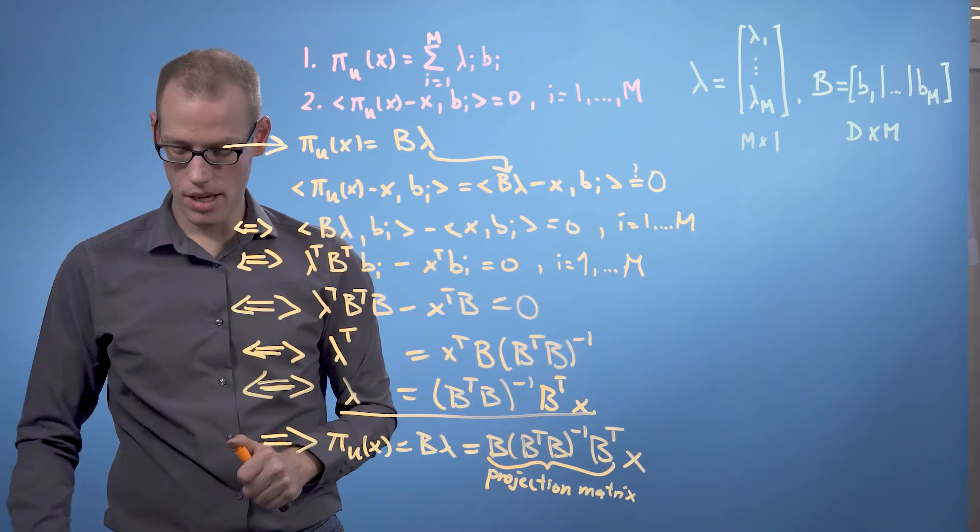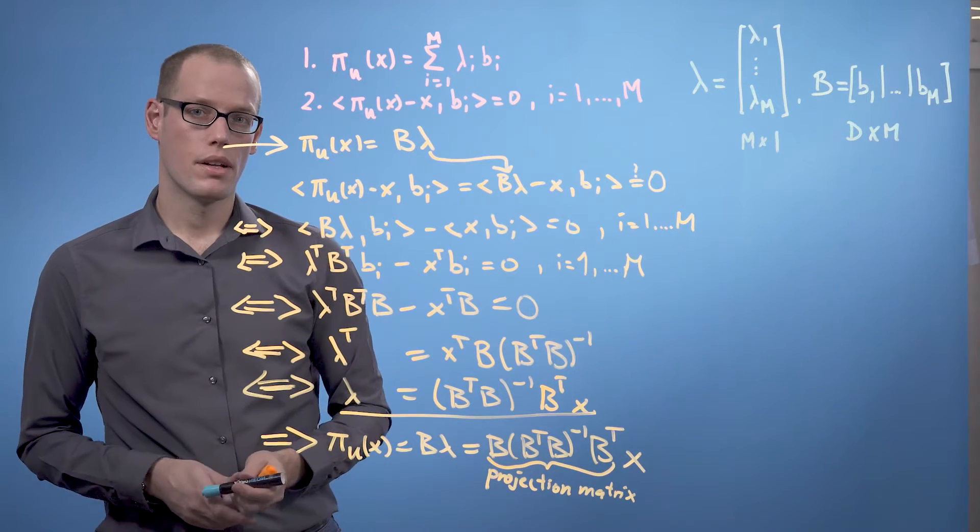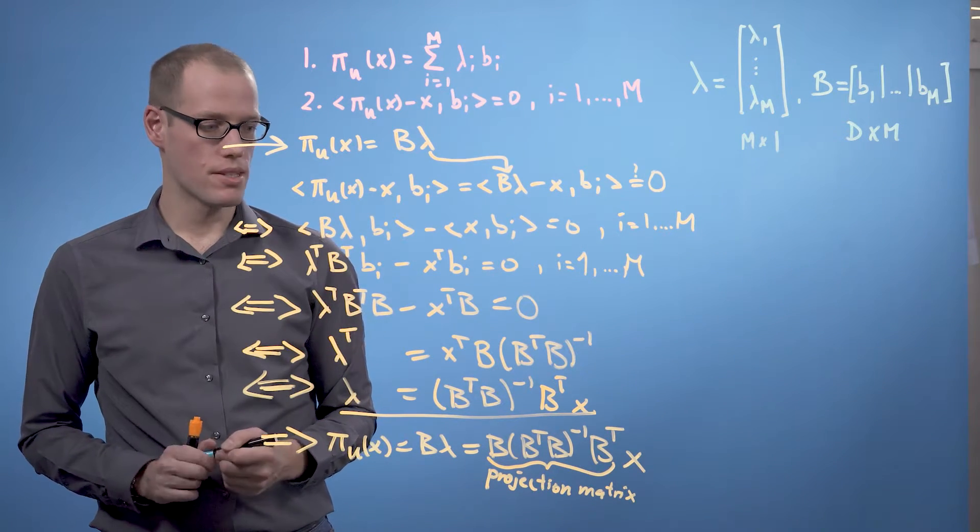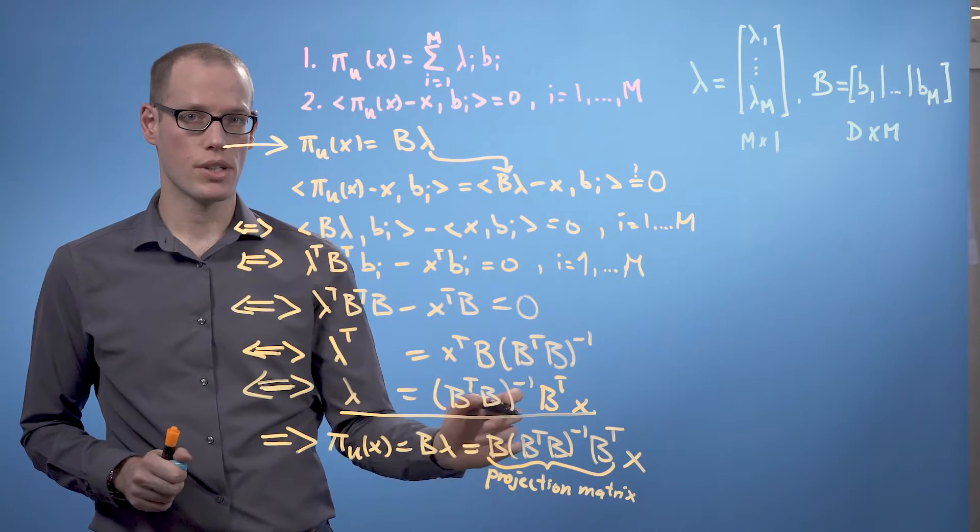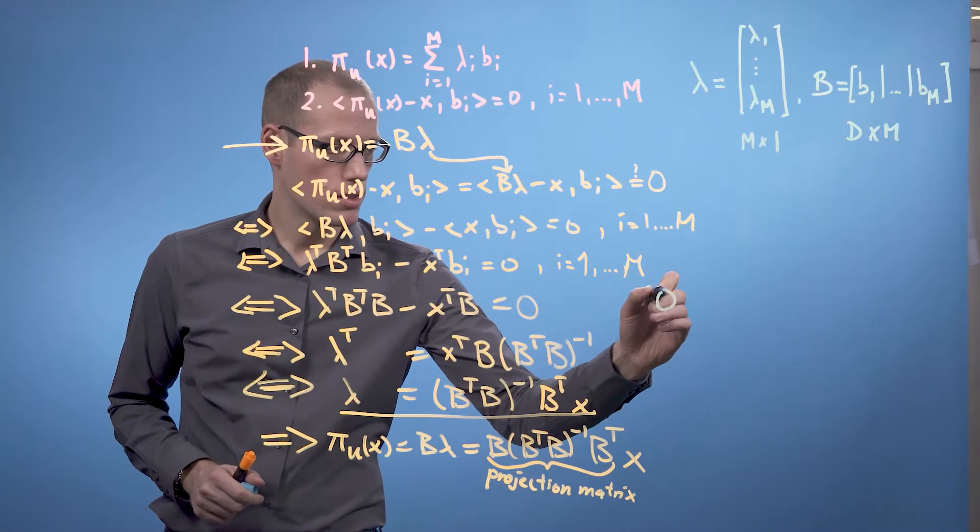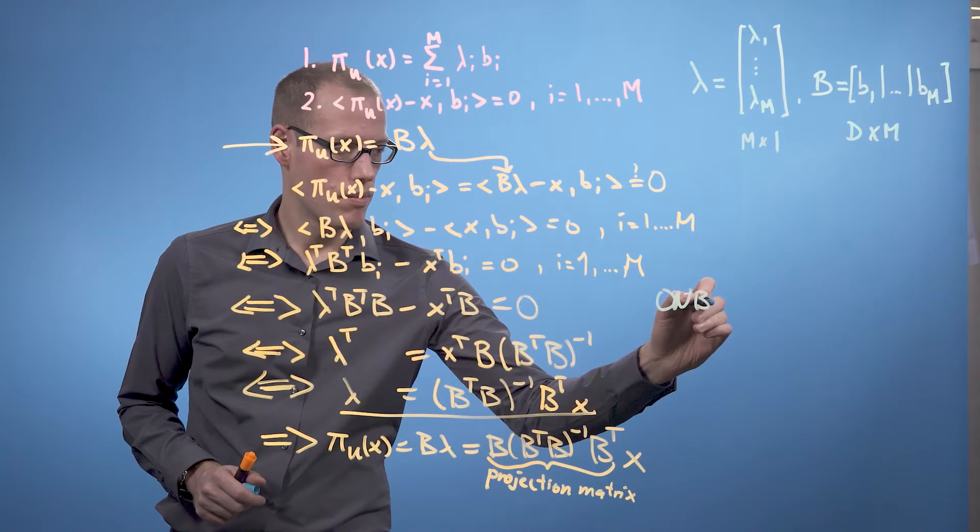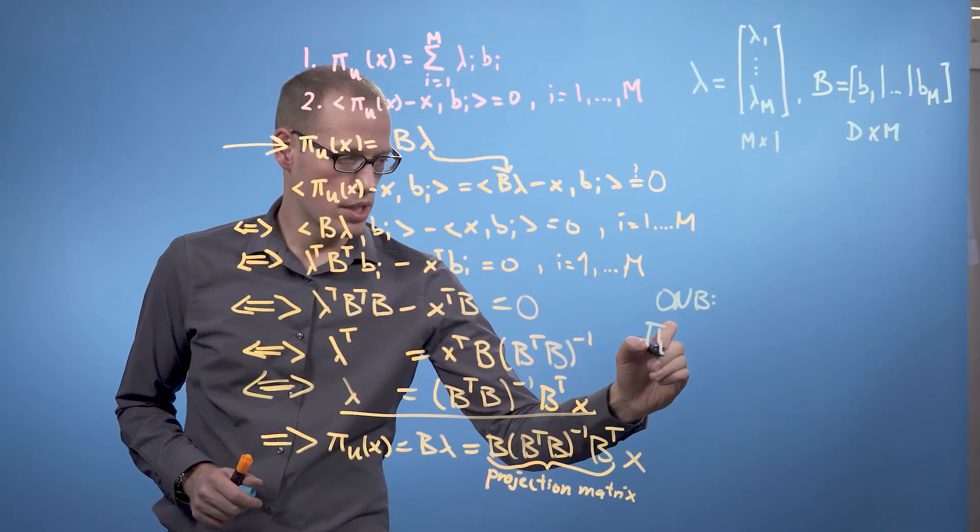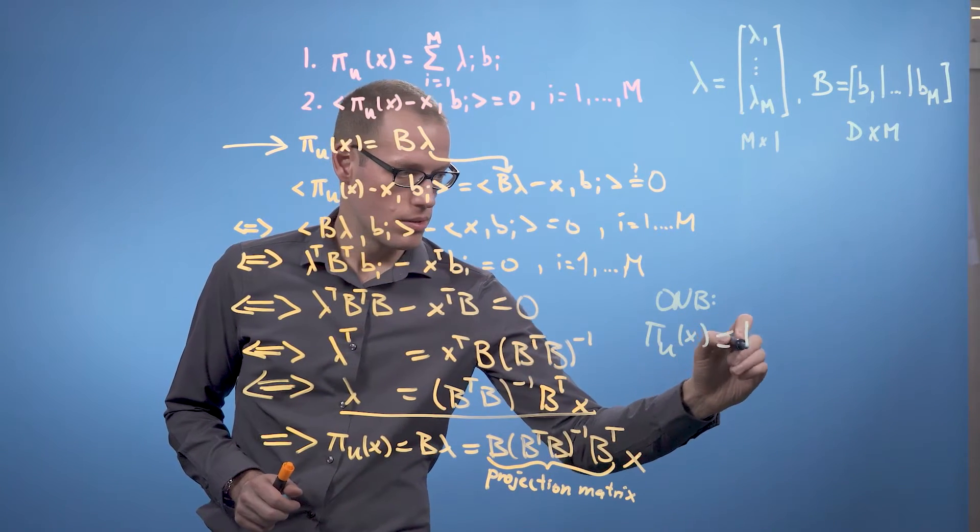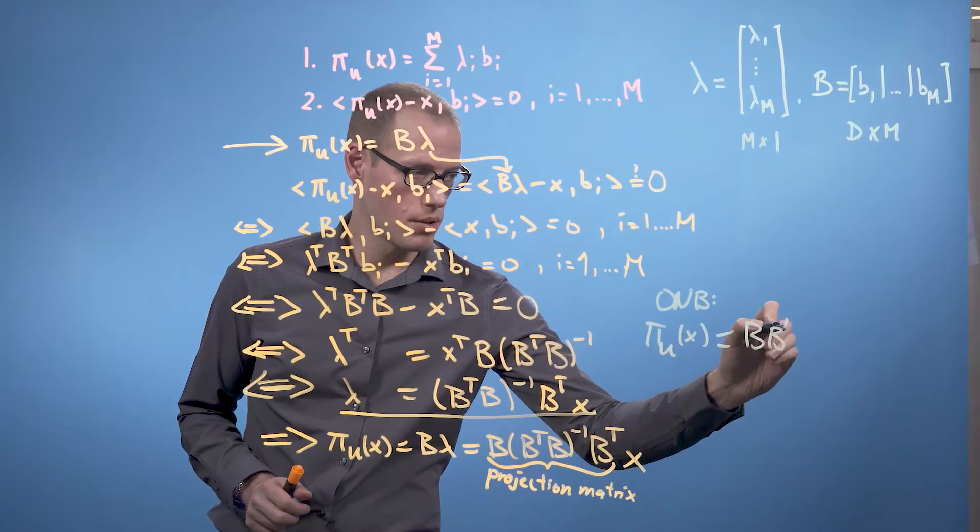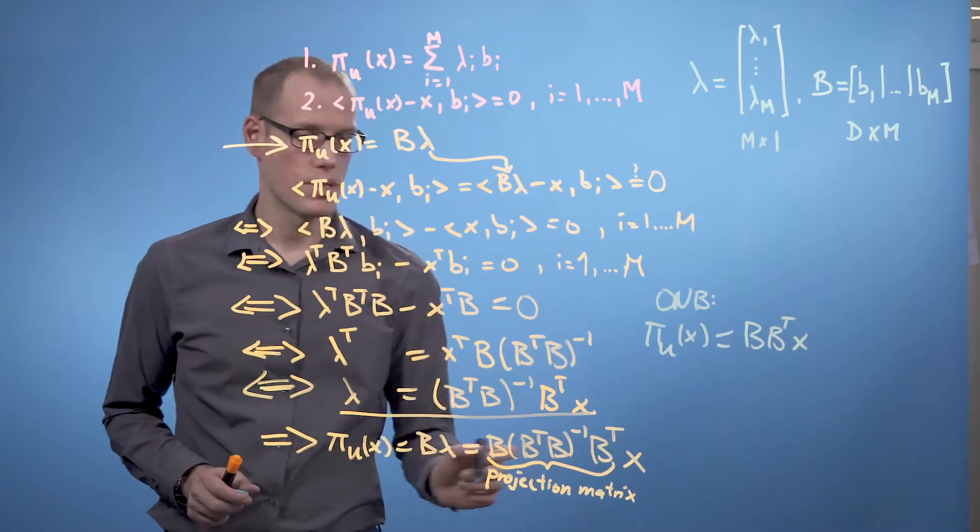And in the special case of an orthonormal basis, B^T times B is the identity matrix. So we would get π_u(x) is B times B^T times x.